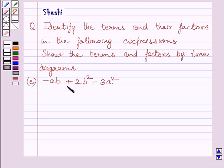Part E is minus AB plus 2B squared minus 3A squared. Let us now start with the solution.